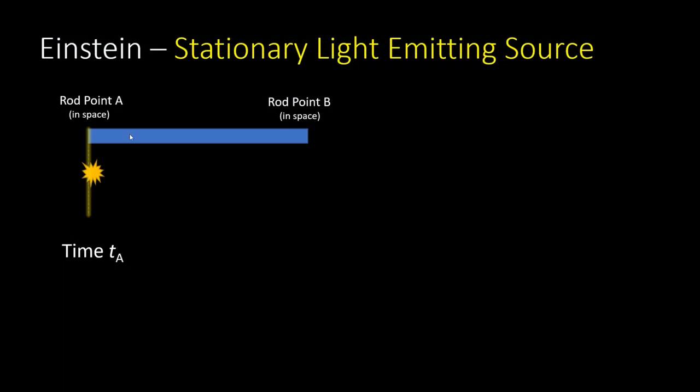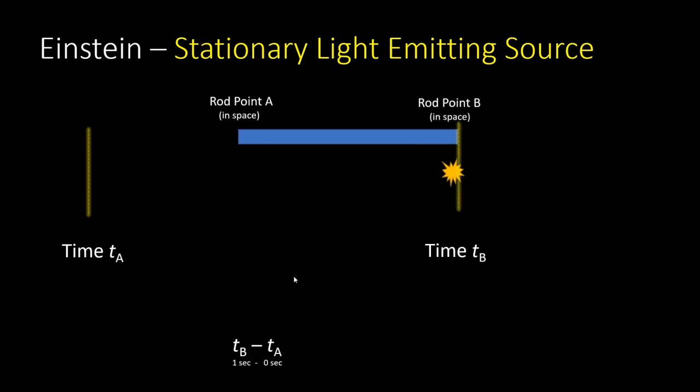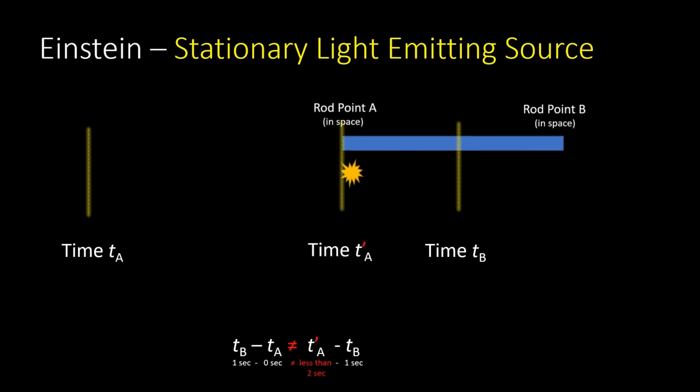Imagine that you're inside this train car moving, and you're looking at this light pulse. You see it travel the full length of the train car, and then bounce back to the other full length of the train car.